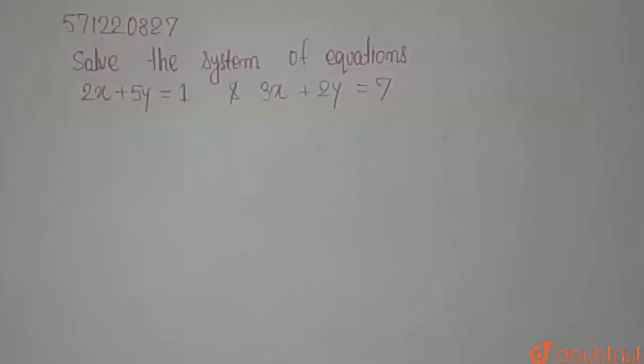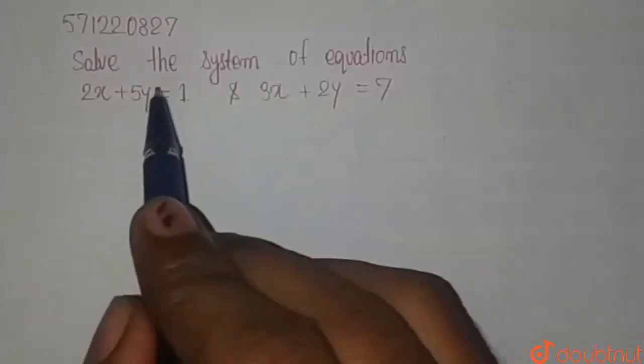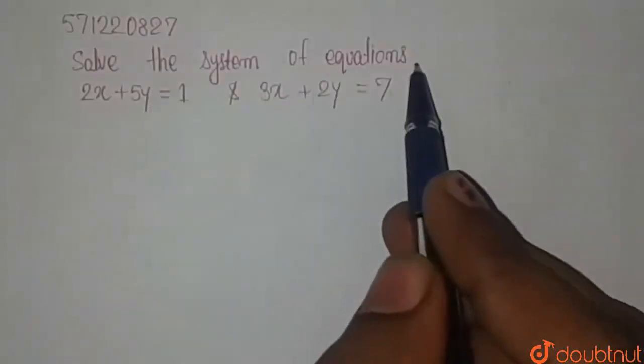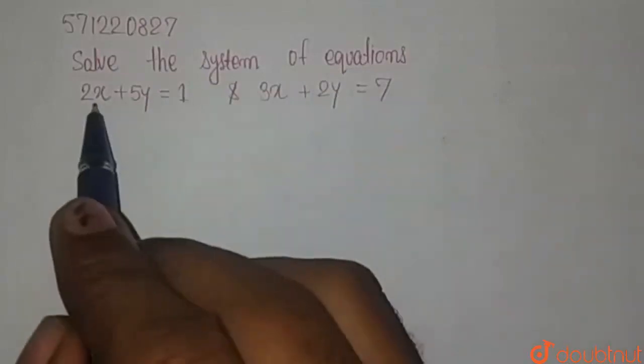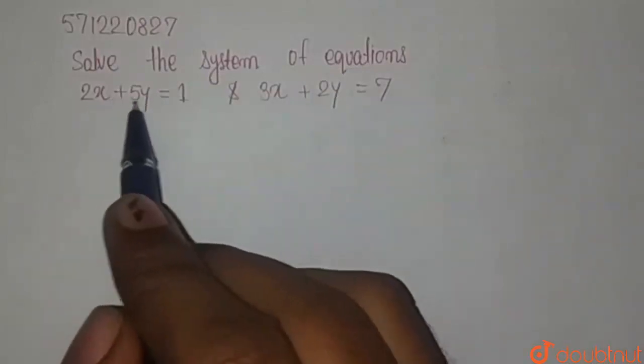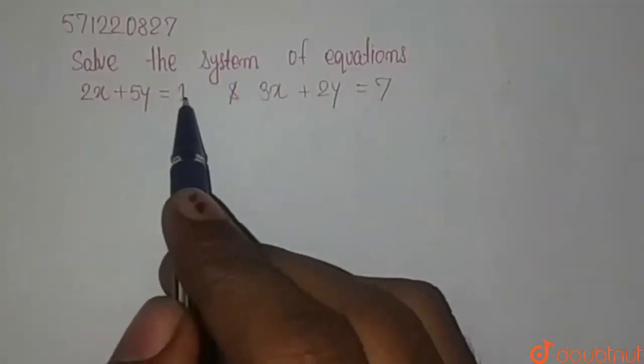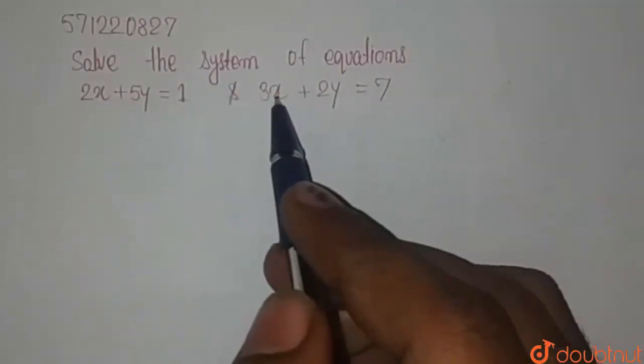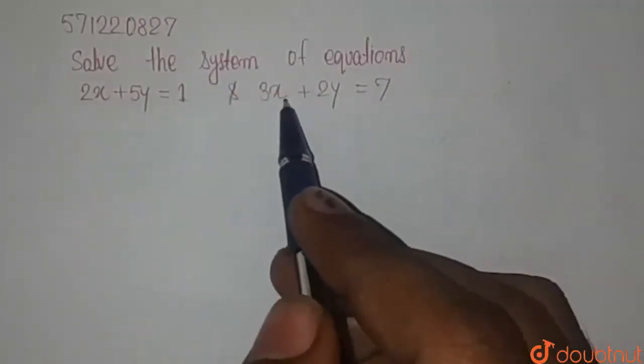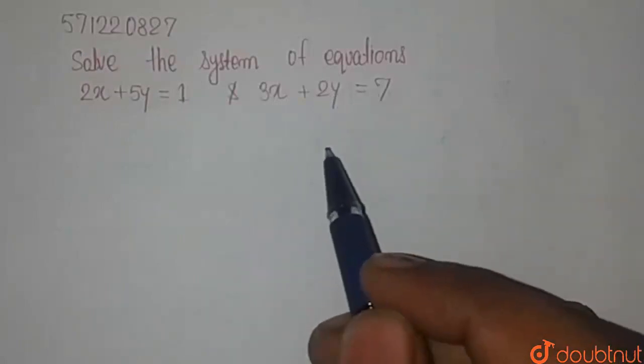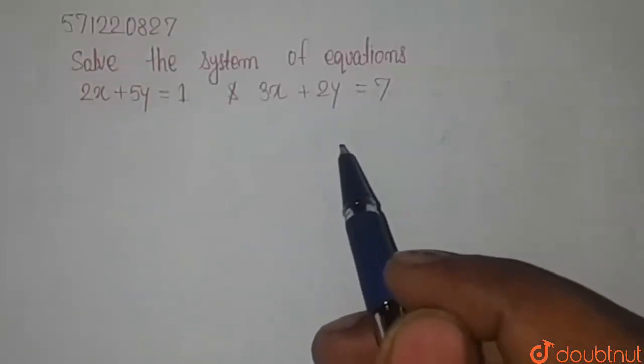Hello, the question is: solve the system of equations given as 2x plus 5y equals 1, and 3x plus 2y equals 7.